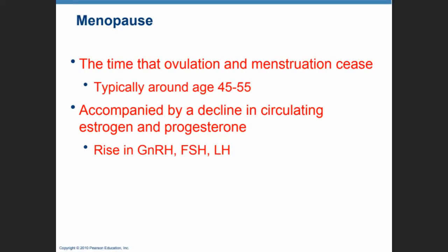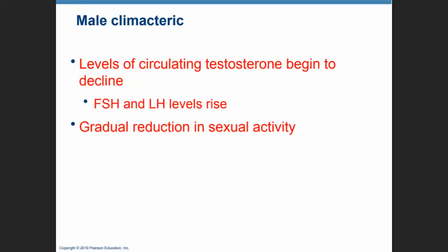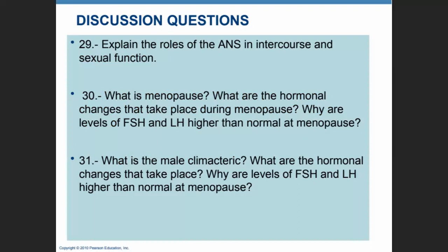Menopause is the time that ovulation and menstruation ceases in females, typically starting around ages forty-five to fifty-five. It is accompanied by a decline in estrogen and progesterone, and because of that decline there are no high levels of estrogen to shut down FSH and LH. So the levels of FSH and LH remain high, as do levels of GnRH. The criteria for menopause is therefore continuously high levels of FSH, LH, and GnRH. You should be able to explain the roles of the sympathetic and parasympathetic nervous system in intercourse, and describe the hormonal changes during menopause — notably high levels of FSH and LH with low levels of estrogen and progesterone.